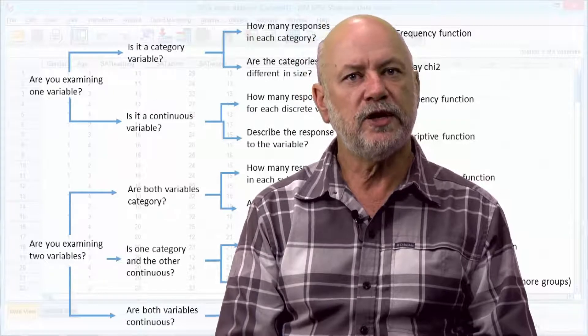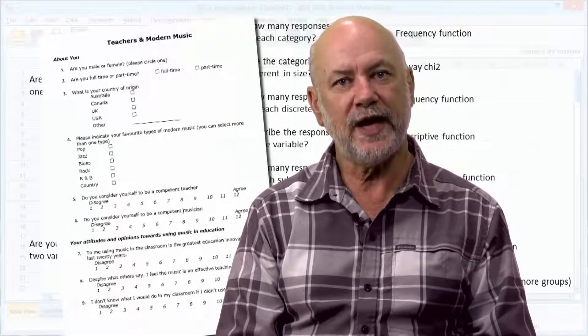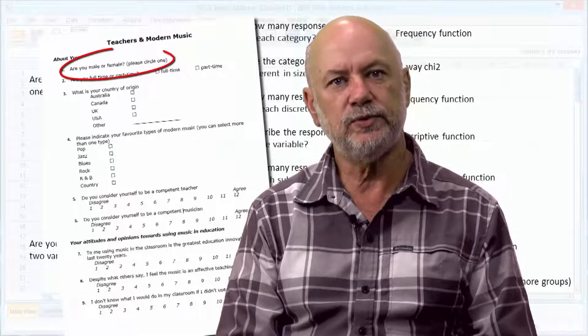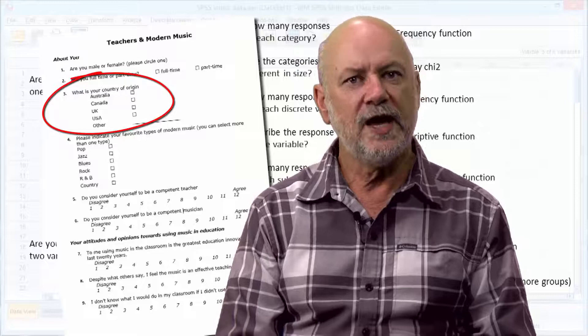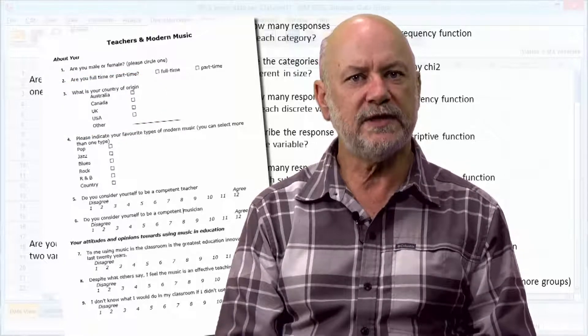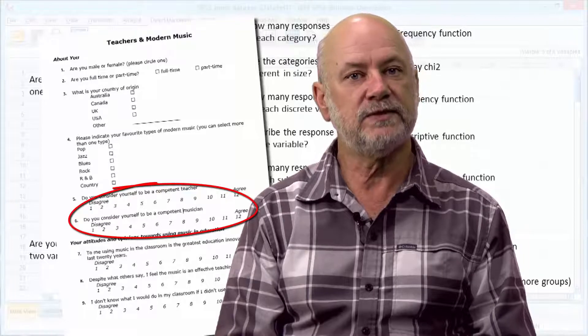A category variable is where your participant selected one option from a list of choices or categories. Gender would be a simple category question. Country of origin is another. Continuous variables are typically answered by answering with a number or by selecting from a range of numbers, such as in a scale.